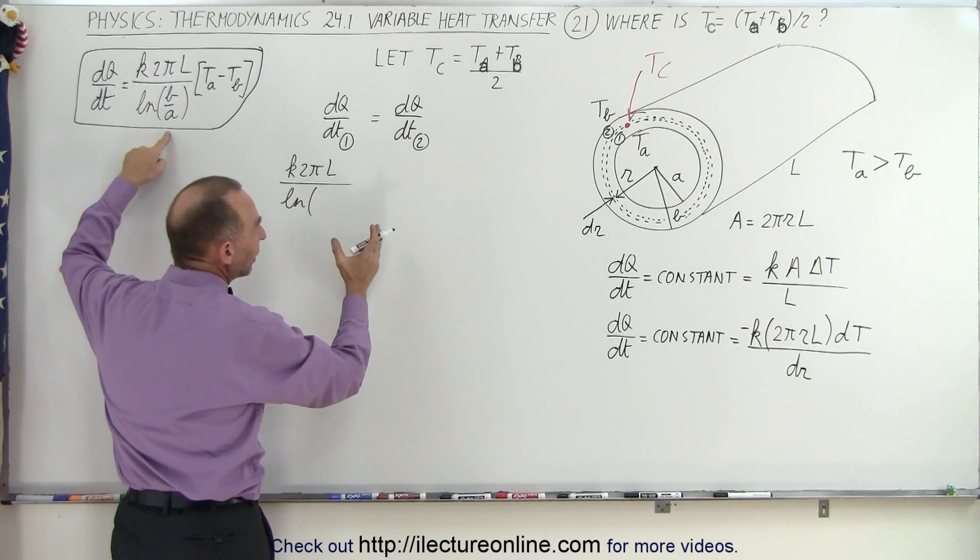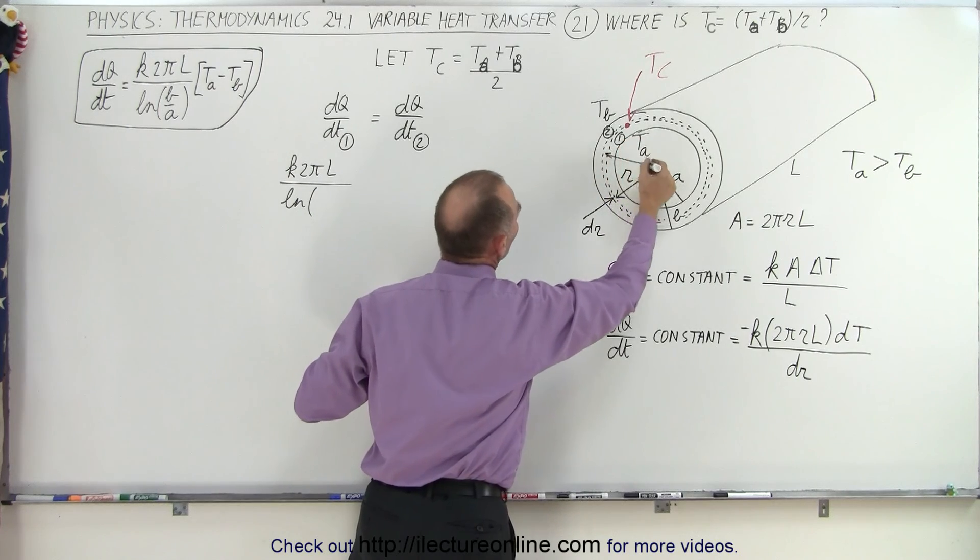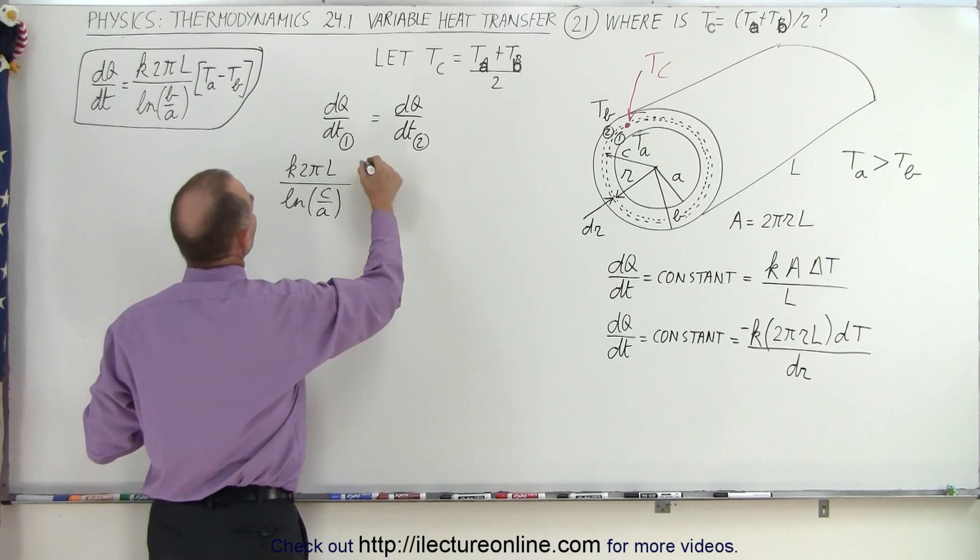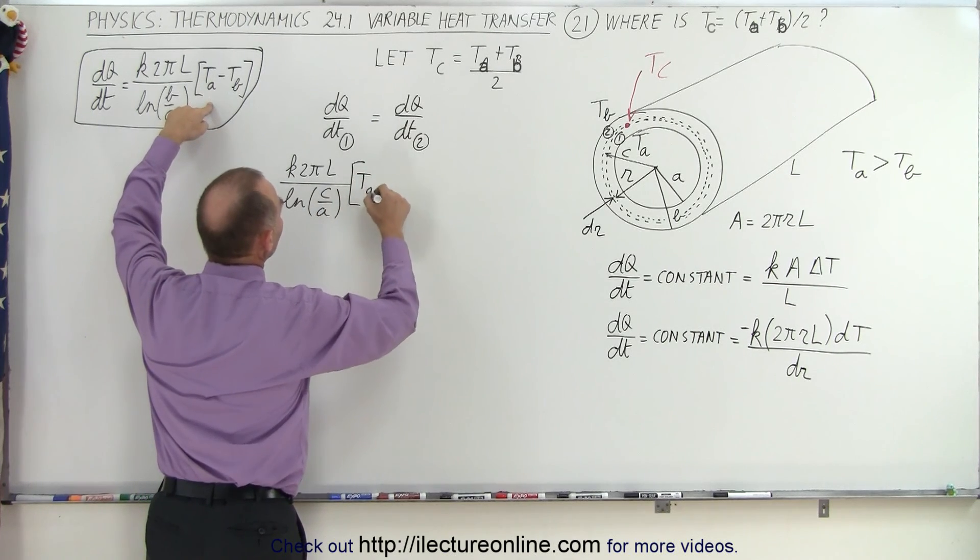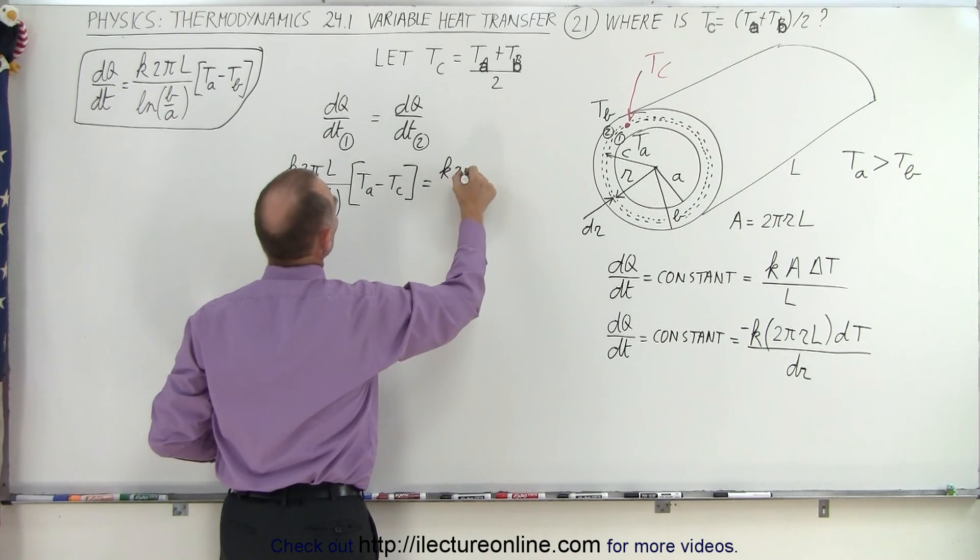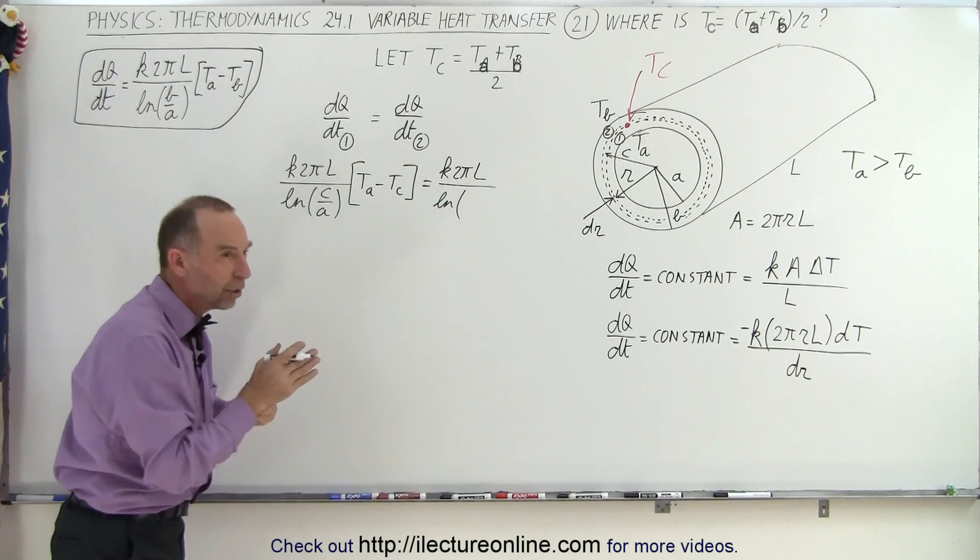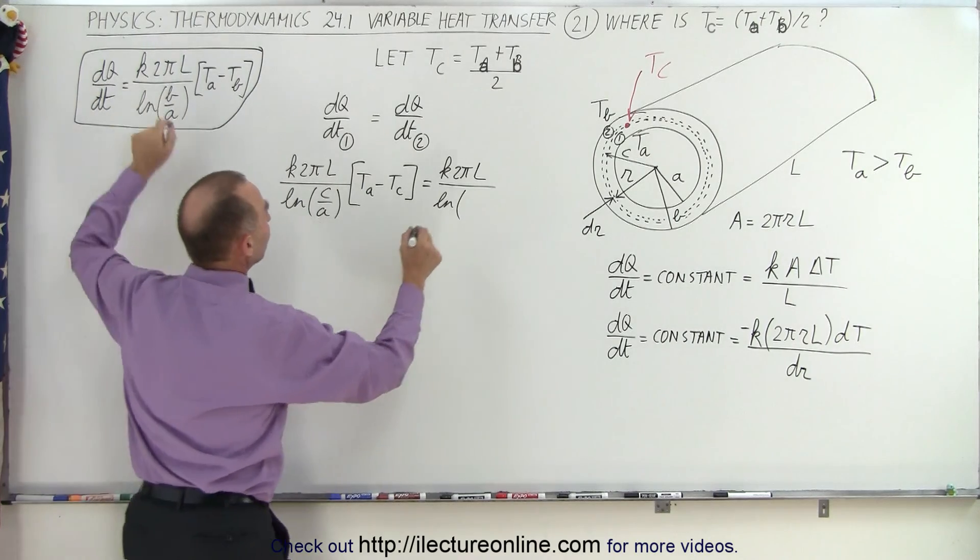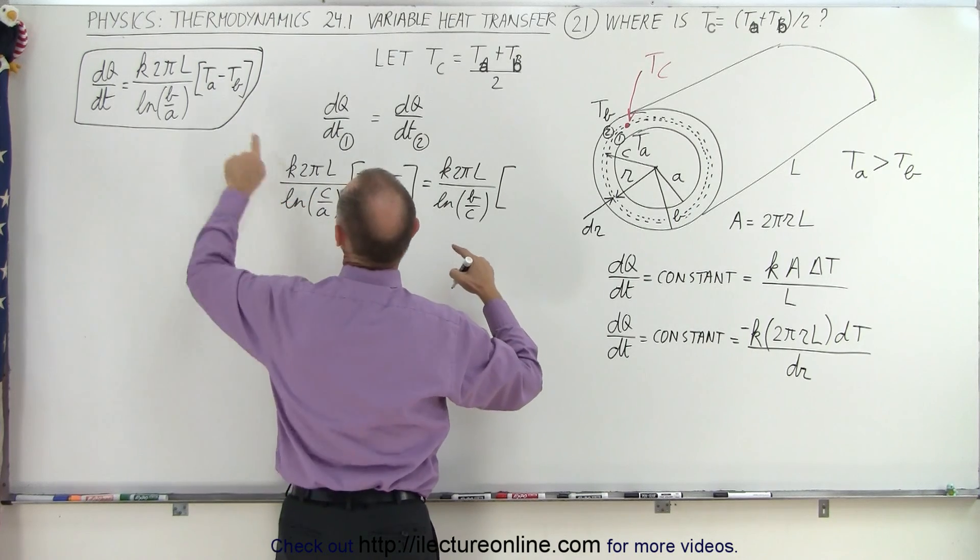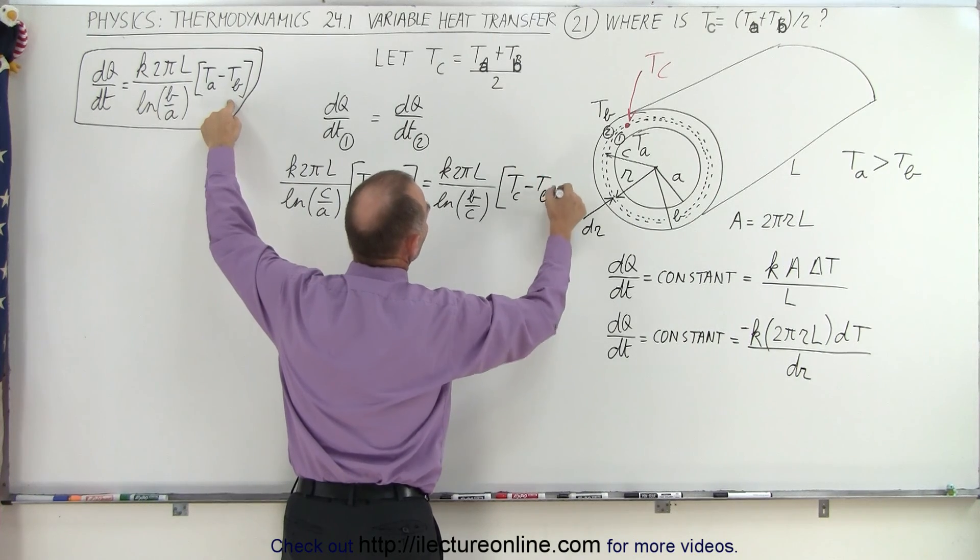now in this case, we go from A to C. We call that point right here, let's call this distance from there to wherever that point is, we'll call that C. So we go from A to C, so C divided by A, times the temperature difference between Ta and Tc. And that must be equal to K times 2πL divided by the natural log of, now we go from C to B, but B is the bigger number of the two, so we go B over here divided by C, and here the temperature difference from the larger to the smaller, so in this case that would be Tc minus Tb.